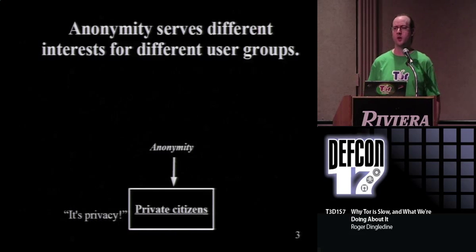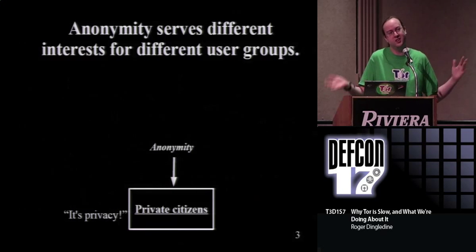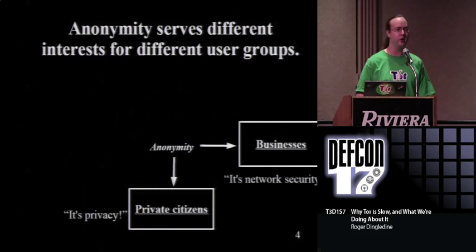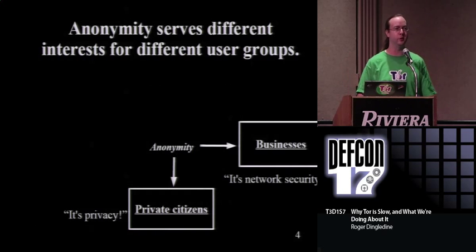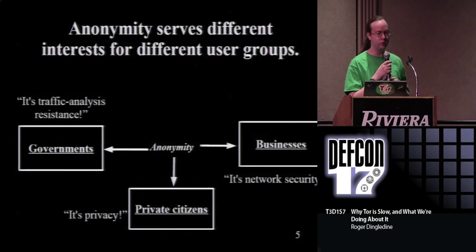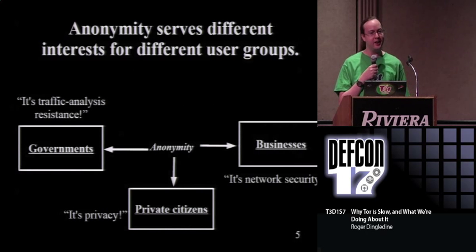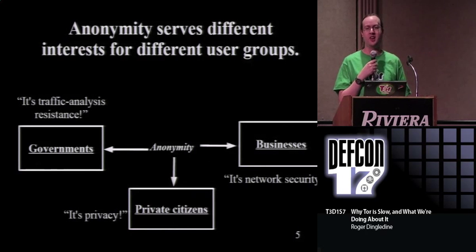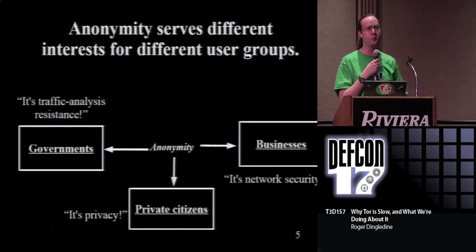When I'm talking to researchers, I tell them I'm working on an anonymity system. But when I'm talking to my parents and grandparents, I tell them I'm working on a privacy system - because anonymity, I'm not sure about that, but privacy, yeah, that's good and wholesome. When I'm talking to Google and Walmart, we work on communication security or network security. And when I'm talking to governments and law enforcement, I'm working on traffic analysis resistant communication networks. It's the same security properties - it just depends how you phrase it for them.